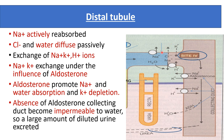In the distal part of the convoluted tubule and collecting duct, sodium is actively reabsorbed and chloride and water are reabsorbed passively. Exchange of sodium and hydrogen ions occurs, and sodium-potassium exchange occurs under the influence of aldosterone. Aldosterone promotes reabsorption of water and depletion of potassium, so excretion of potassium increases. In the absence of aldosterone, the collecting duct becomes impermeable to water and large amounts of diluted urine are excreted.